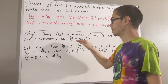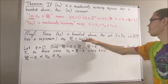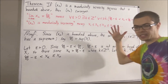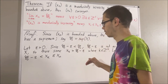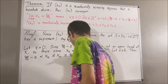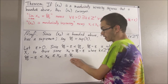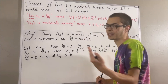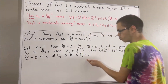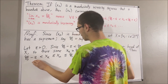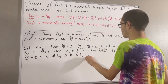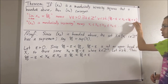But then, since psi is an upper bound of this set, this means that every element of this set is less than or equal to psi, which means x sub n is less than or equal to psi. And of course, psi is strictly less than psi plus epsilon. So, through this chain of inequalities, we have shown that psi minus epsilon is less than x sub n, which is less than psi plus epsilon. And that is exactly what we wanted to show.